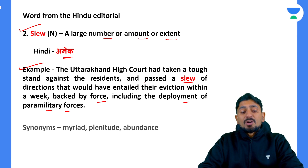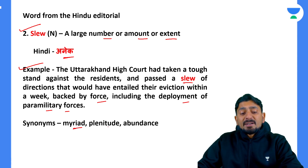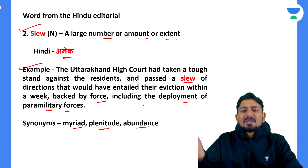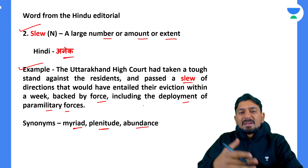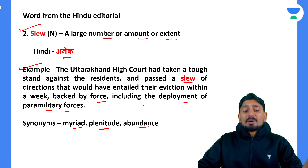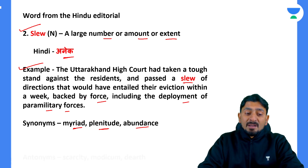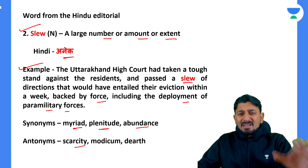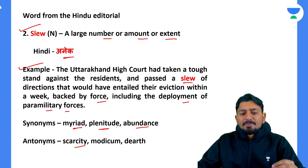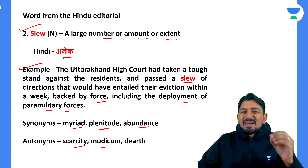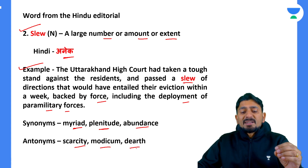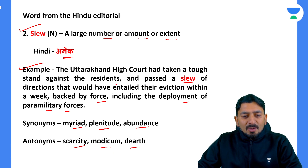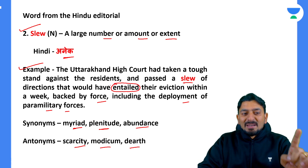Synonyms for slew: myriad, plenitude, and abundance — all meaning a very large quantity. Antonyms for slew: scarcity (kisi cheez mein kami), modicum (very few, very less, very little), and dearth (also means shortage or lack). Another word from that same sentence is 'entailed,' which we will see in the next word.